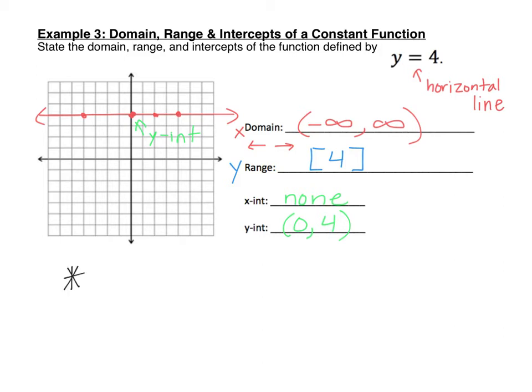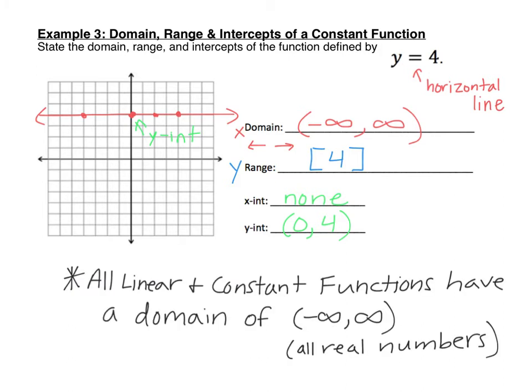You're going to find that all linear and constant functions — a constant function is just a special type of linear function — all have a domain of negative infinity to positive infinity. Go ahead and add that to your notes. Anytime we have a linear function in the form y equals mx plus b, f of x equals mx plus b, or a constant function, it will always have a domain of all real numbers.